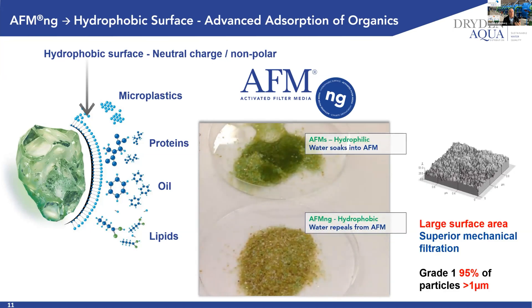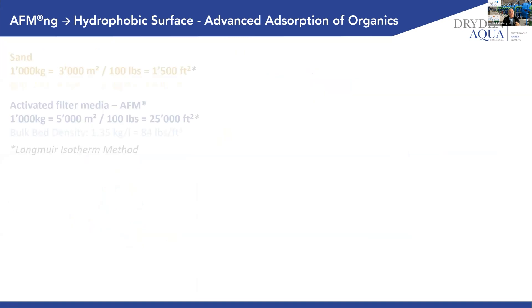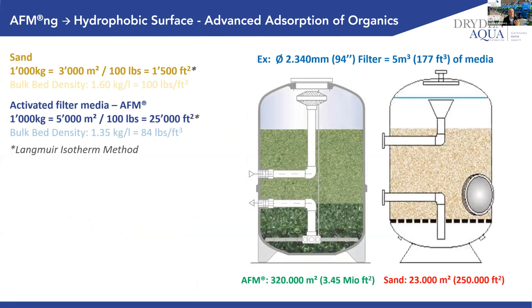During the process, we also increase the surface area itself. For example, in a vertical filter with 5 cubic meters or 177 cubic feet of media, the surface area with AFM is 320,000 square meters or 3.5 million square feet, whereas with sand you have ten times less — or even more — less surface area. With this higher surface area, we have much better mechanical filtration properties to remove particles.